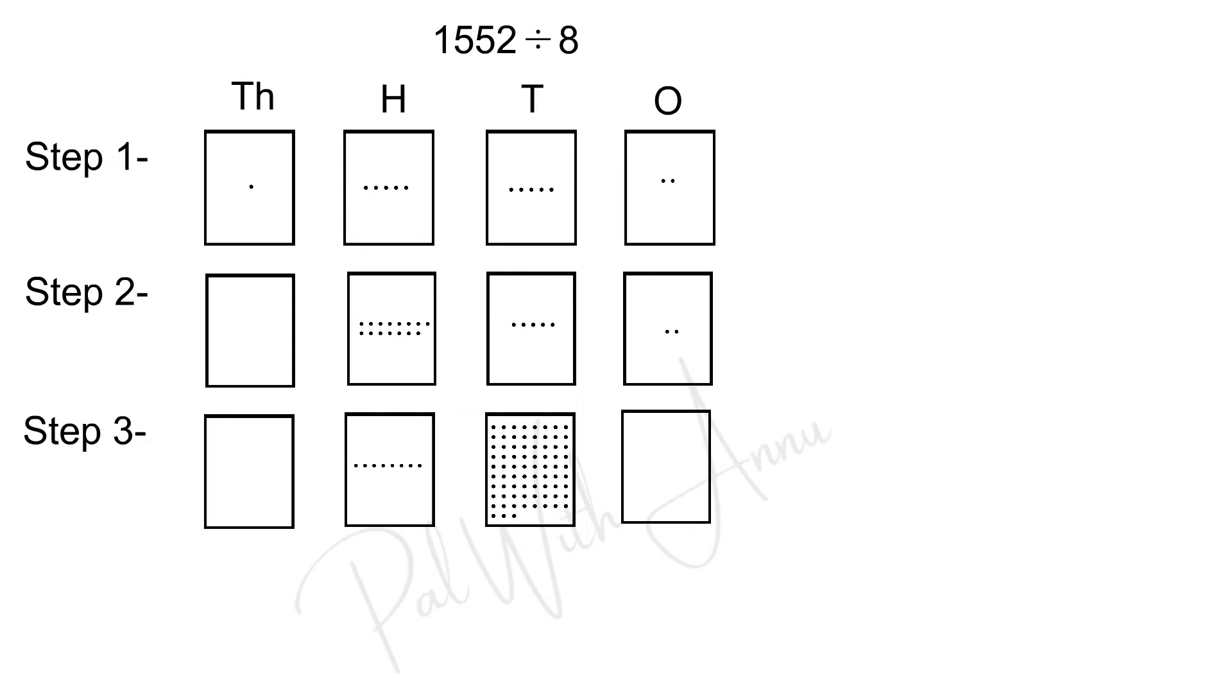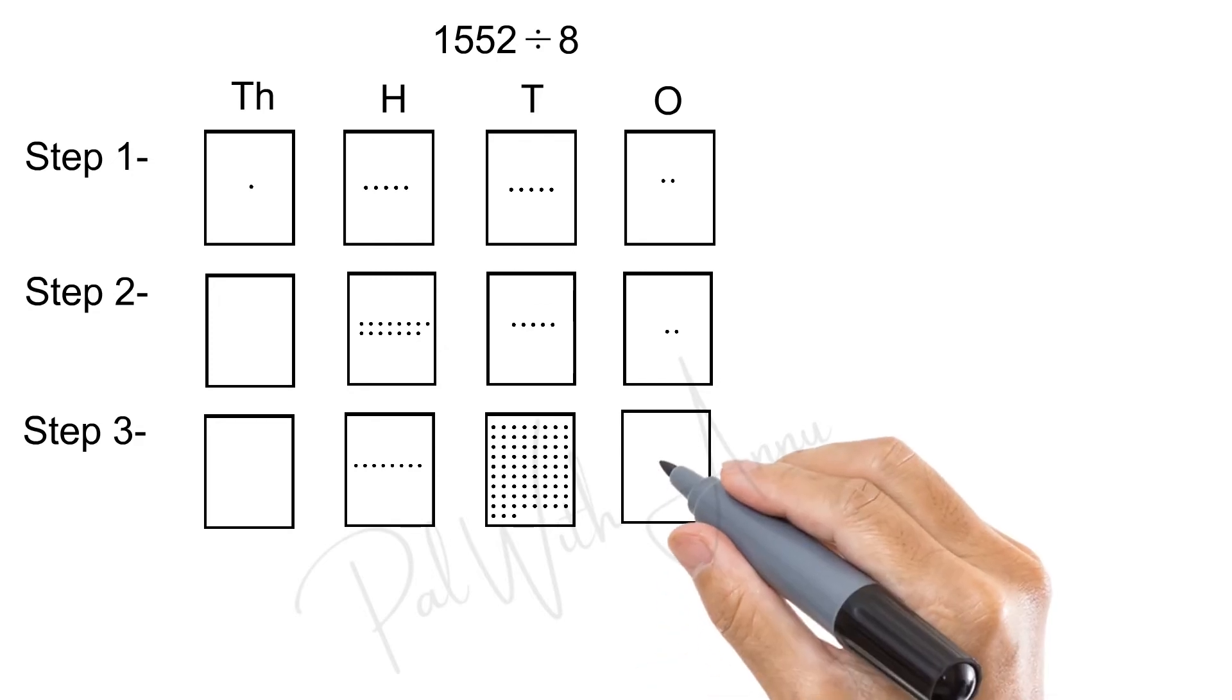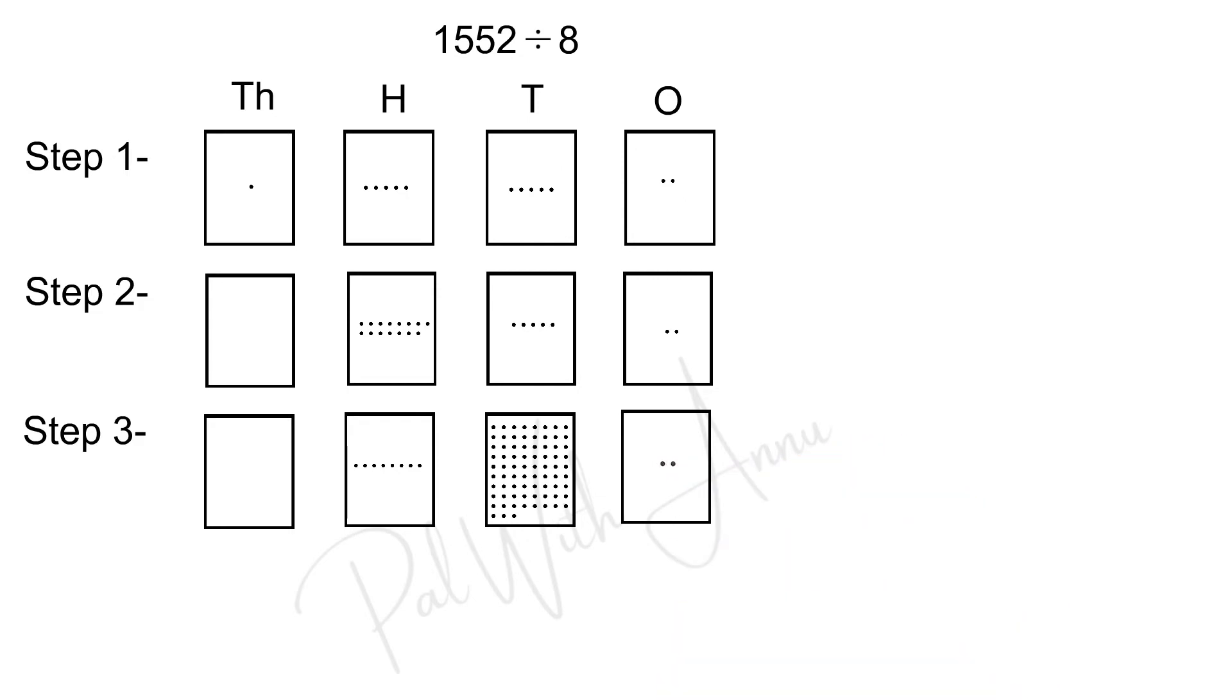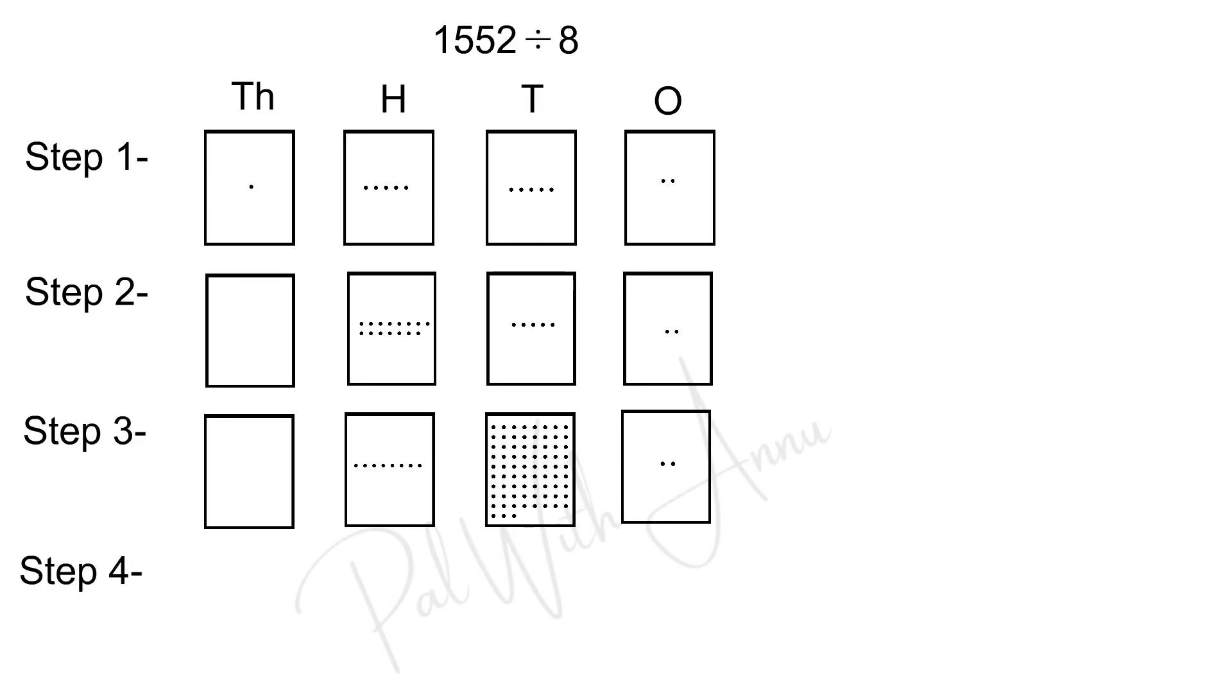So, what we will do is, we will move this 3 dots from the 10's box to 1's box in the next step. And, here, write 1's box number as it is. Now, we will move to step number 4. Again, draw the 4 boxes.